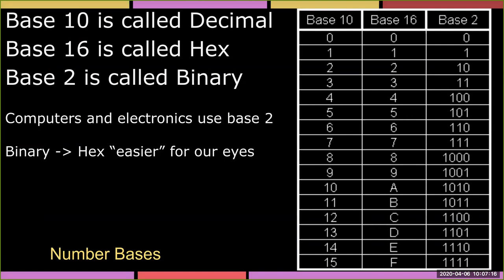Let's talk about number bases. Hopefully we're all familiar with the decimal system, or base 10. This is what we use pretty much every day, where we express in the first position of a number everything from zero to nine. When we exhaust that, we make the digit zero and carry a one — so if I added one to nine, I turn this to zero and carry the one over.